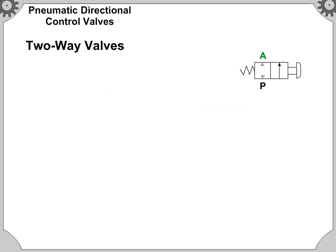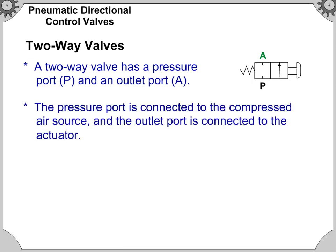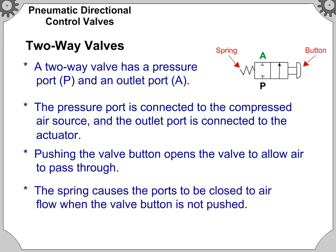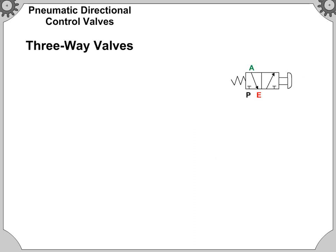A two-way valve has a pressure port P and an outlet port A. The pressure port is connected to the compressed air source and the outlet port is connected to the actuator. Pushing the valve button opens the valve to allow air to pass through. The spring causes the ports to be closed to airflow when the valve button is not pushed. Two-way valves are commonly used to start and stop flow in a particular line.